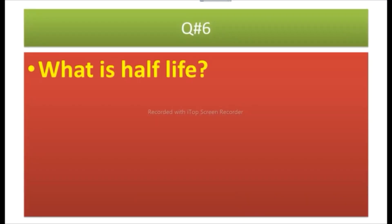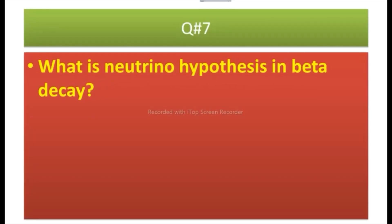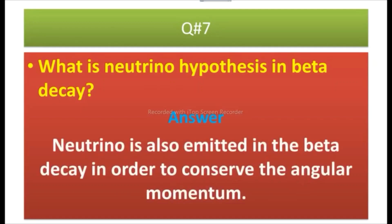Question number six: What is half-life? Answer: It is the time in which half of the atoms of the radioactive element decay. Question number seven: What is the neutrino hypothesis in beta decay?